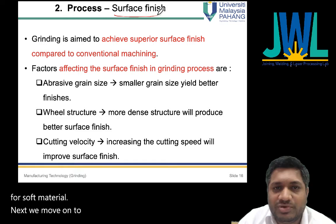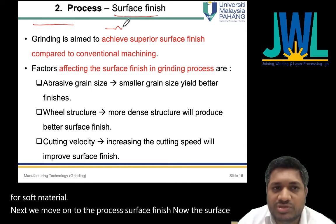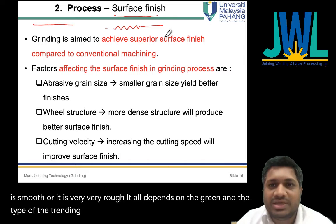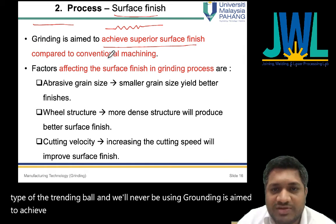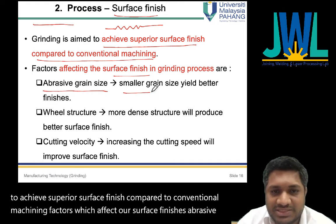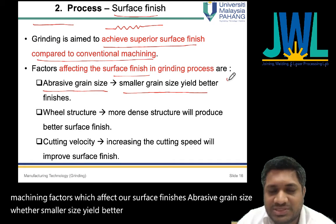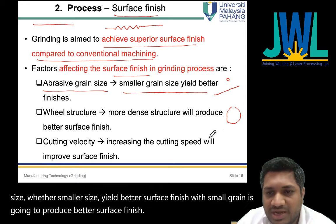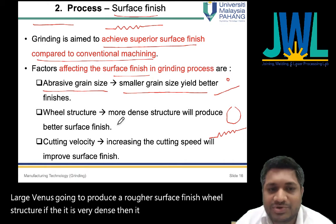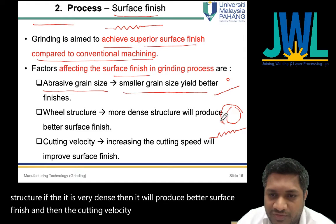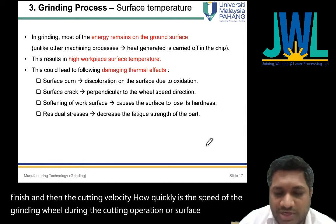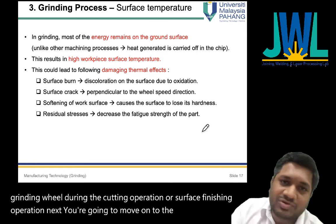The surface finish — whether smooth or rough — depends on the grain type and the grinding bond and wheel used. Grinding is aimed at achieving superior surface finish compared to conventional machining. Factors which affect surface finish include abrasive grain size (smaller grain gives better finish), wheel structure (denser structure gives better finish), and cutting velocity (the speed of the grinding wheel during the operation).